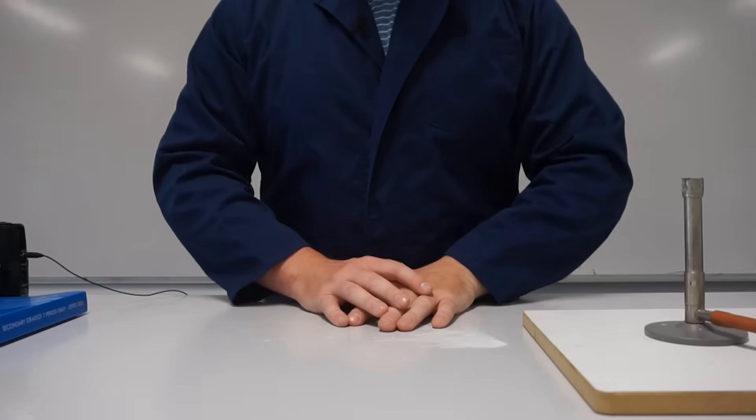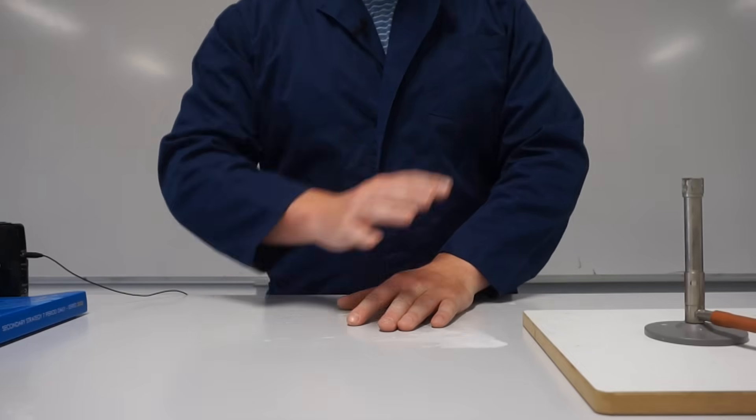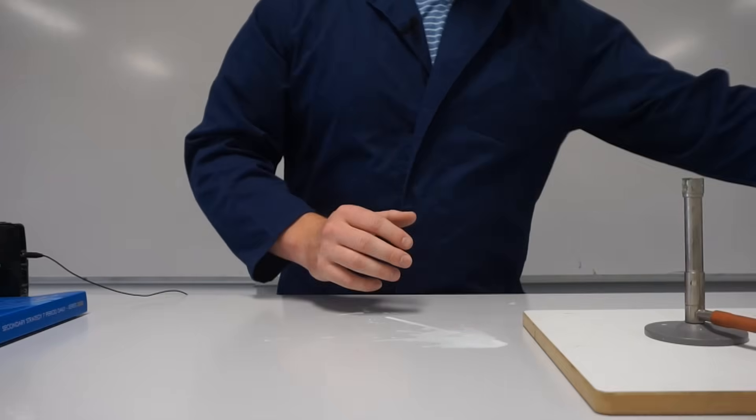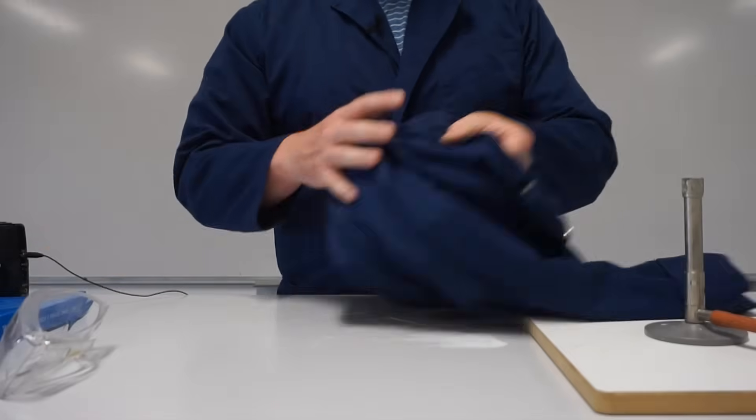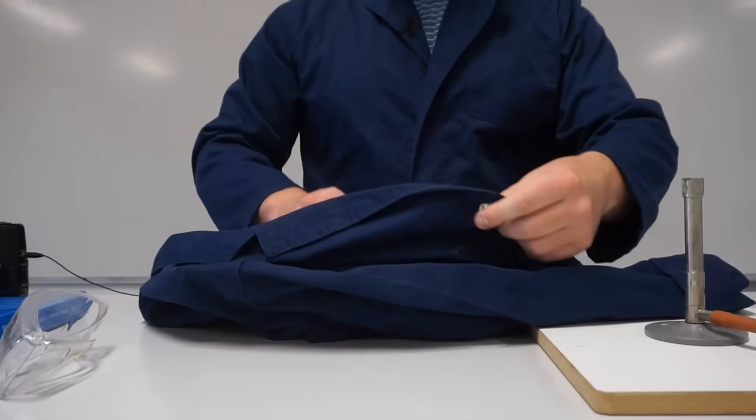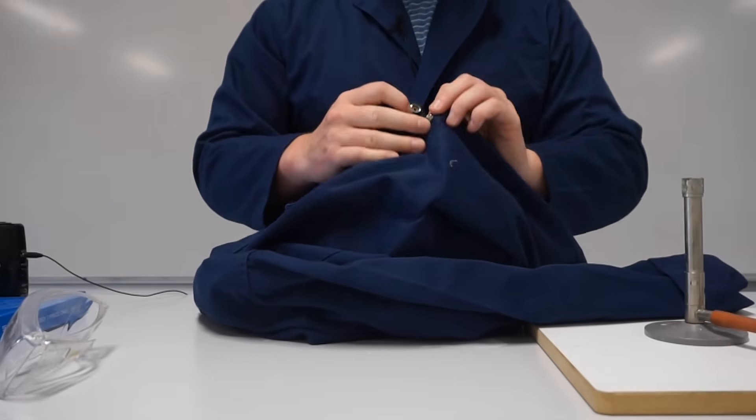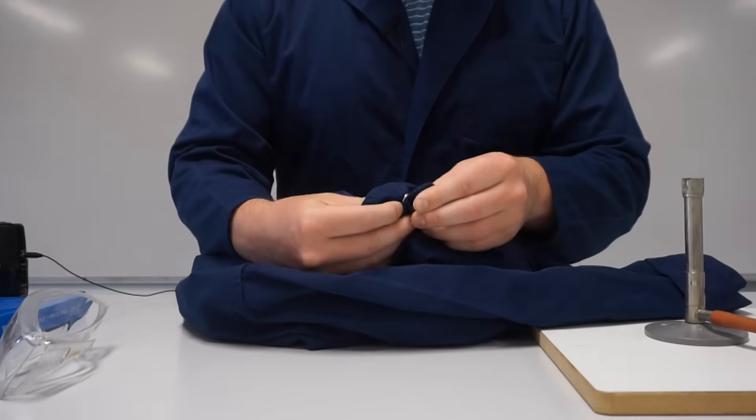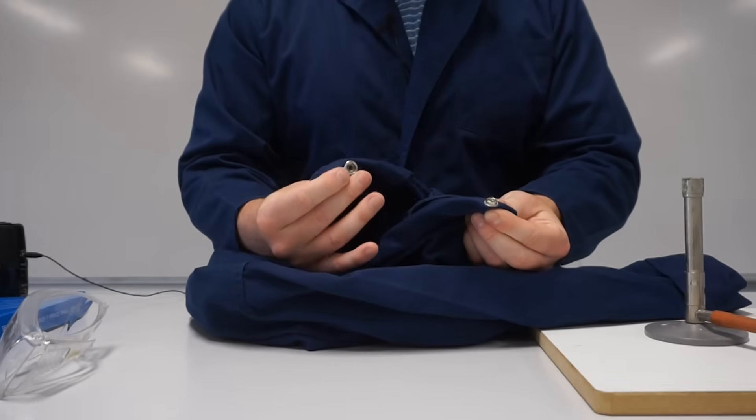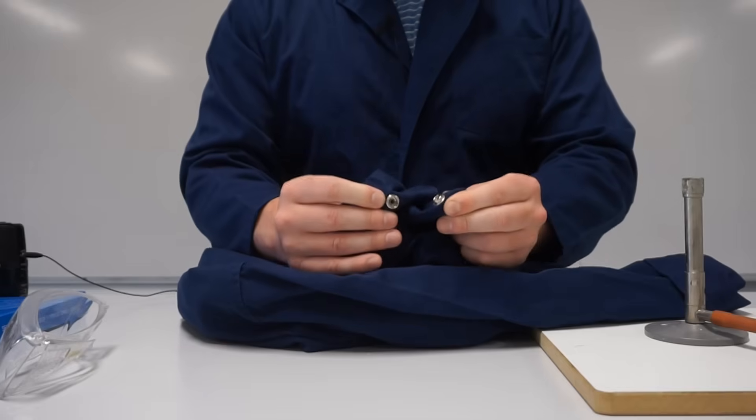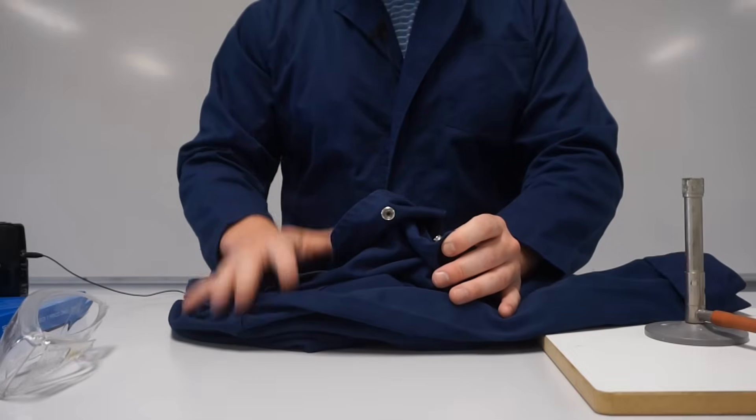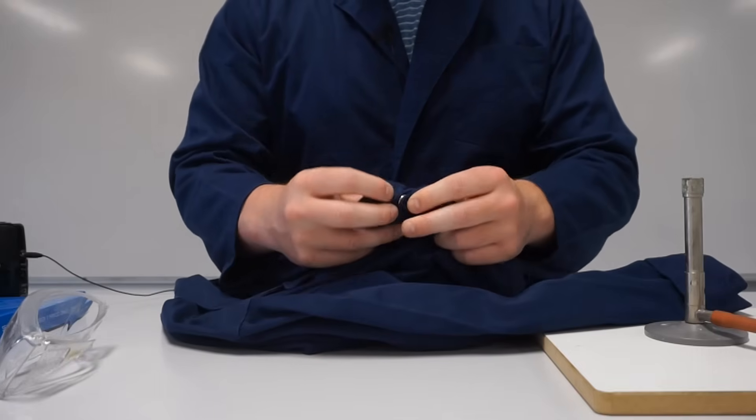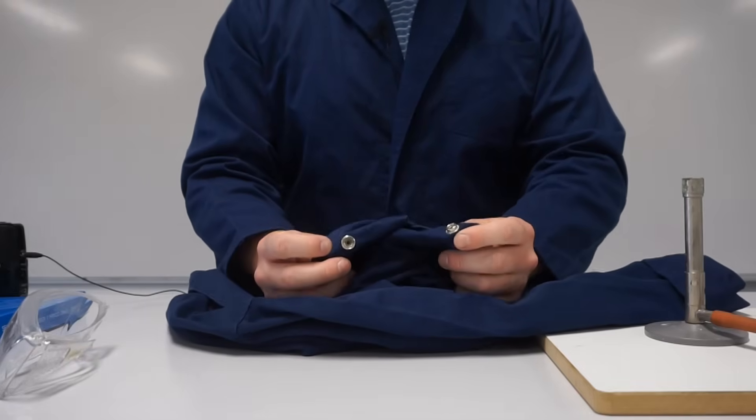I also just want to explain some of the safety equipment that you should have with you when you're using a Bunsen burner. That includes your safety glasses and your lab coat. Your lab coat should have press studs as its method of doing up and these press studs are really important because if your lab coat does catch fire, if there's some sort of emergency and you have to get this off really quickly, the press studs will allow you to take it off as quickly as possible.